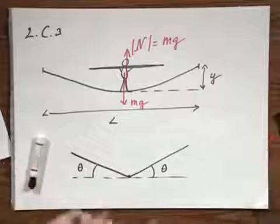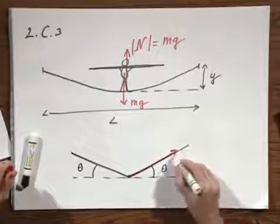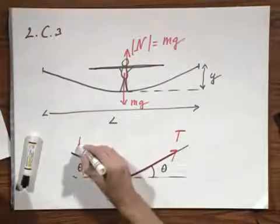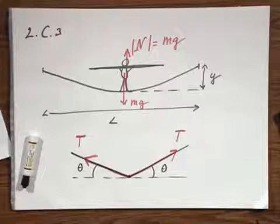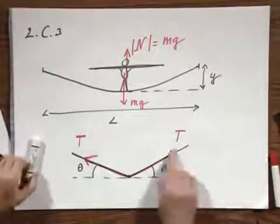And so there is a tension in this rope pulling to the right. T stands for tension. And here there is the same force to the left. T stands for tension. And what is the net force of these two?